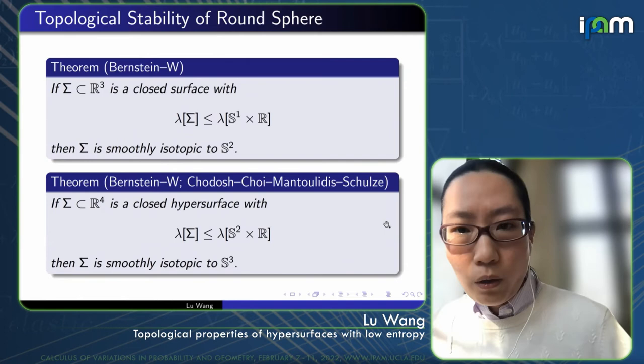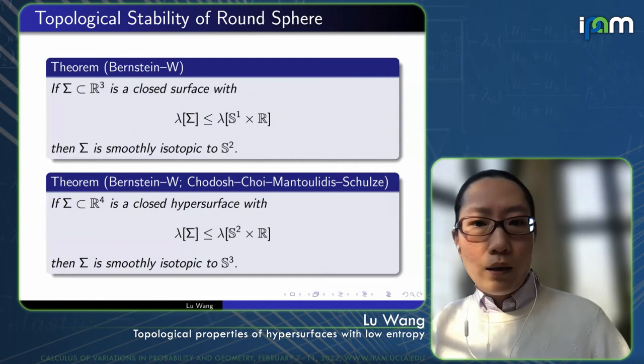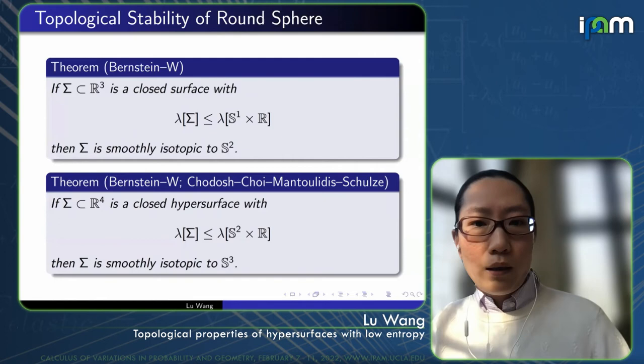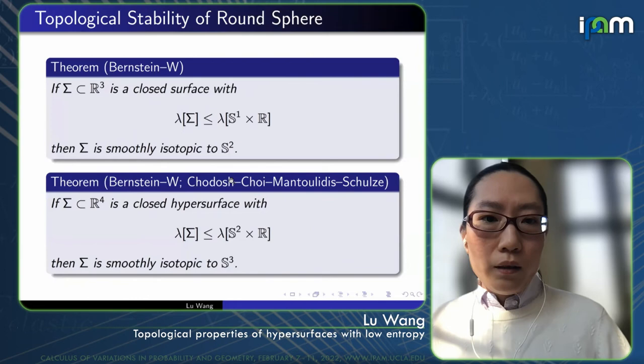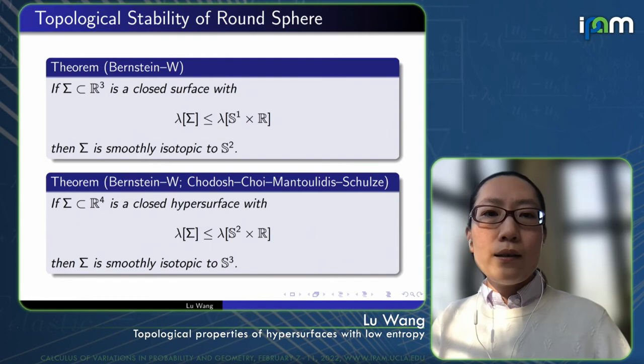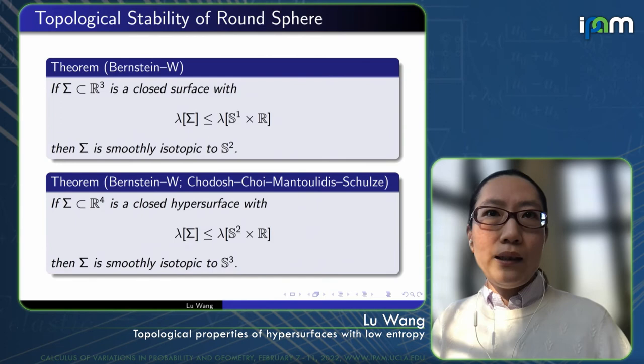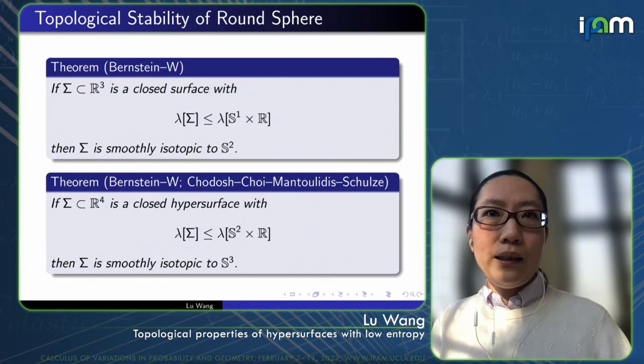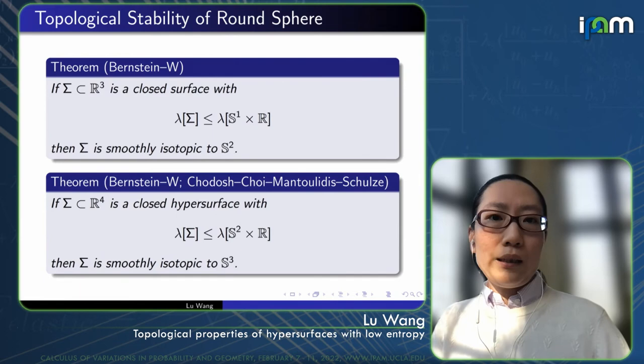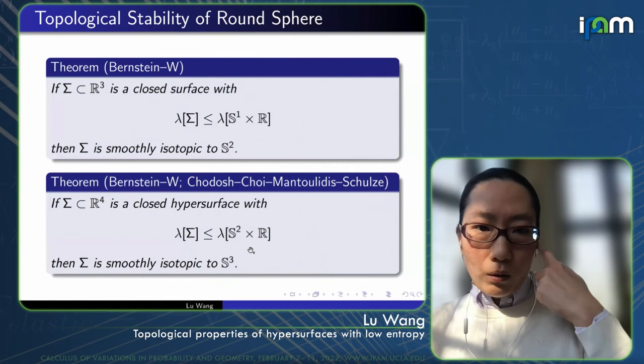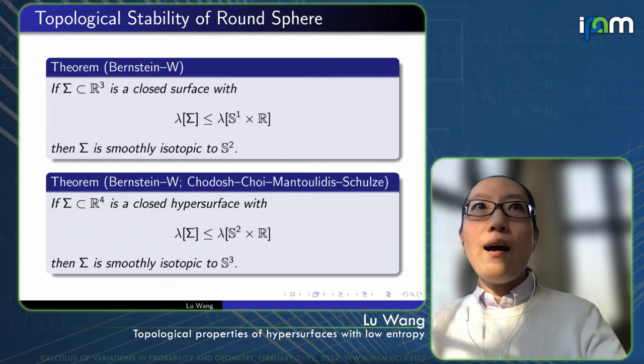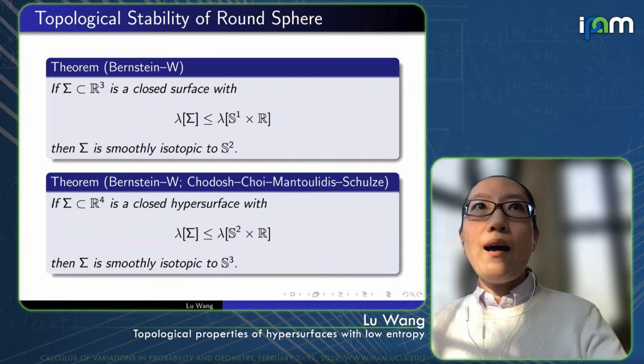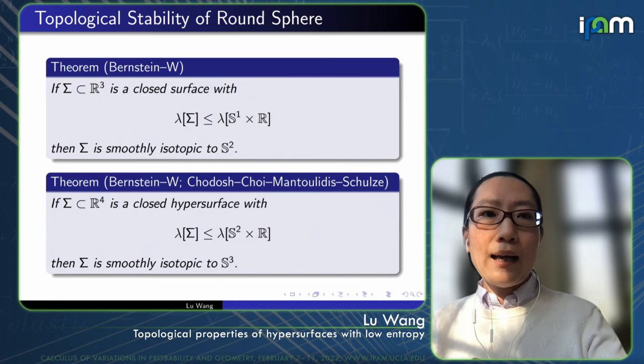This is also independently proved by Choi-Haslhofer-Hershkovits. Both of us actually use mean curvature flow but in slightly different manners. Choi's method is based on perturbative arguments. They perturb the surface so the flow starting at this perturbed one will only develop a nice singularity, namely the cylindrical singularity whose entropy has been computed explicitly. Then you can use the monotonicity to prove this theorem.